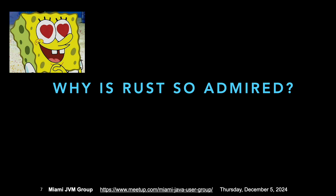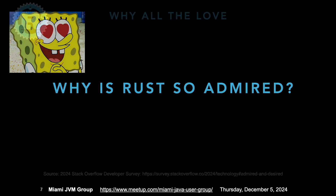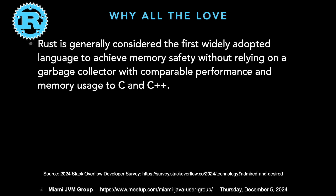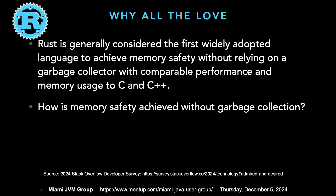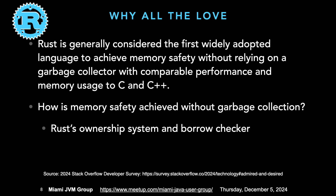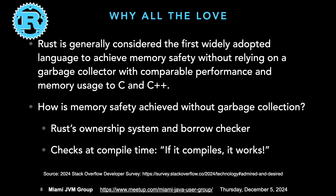So why is Rust so admired? Rust is generally considered the first widely adopted language to achieve memory safety without relying on a garbage collector, with comparable performance and memory usage to C and C++. How does it achieve this without a garbage collector? It has this concept of ownership and a borrow checker. It does all this at compile time, checking for the safety of the program. So the saying goes: if it compiles, it works.